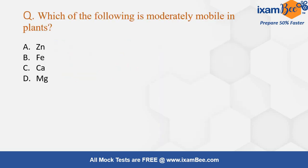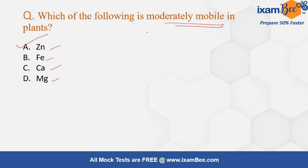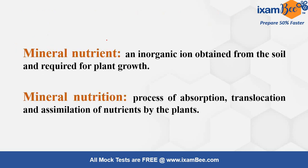Let's start with this question. Which of the following elements is moderately mobile in plants? Your options are Zinc, Fe (iron), Calcium, and Magnesium. The correct answer is Zinc. If you find difficulty in solving this question, by understanding the concepts discussed in this video, you will be able to solve the question within a minute.